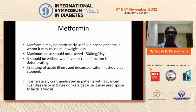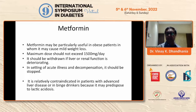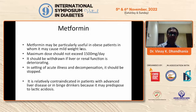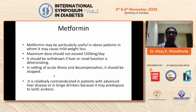Metformin is one drug which has been very, very useful and may be particularly useful in obese patients where it may cause mild weight loss. The maximum dose should not exceed 1,500 mg. There are concerns about lactic acidosis with metformin in chronic liver disease. It should be held in Child-Pugh stage C where lactic acidosis risk is high. Patients with Child-Pugh stage A and B can use metformin at lower doses. In setting of acute illness and decompensation, it should be stopped immediately. It is relatively contraindicated in advanced liver disease or binge drinkers.